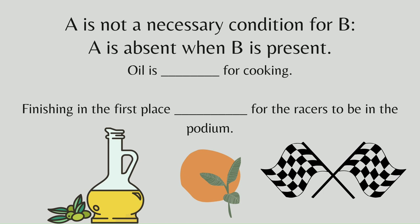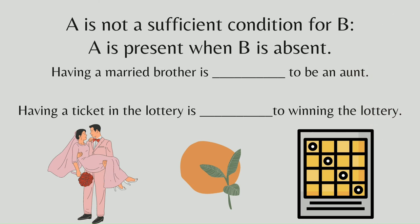A is not a necessary condition for B when A is absent but B is still present. Oil is not a necessary condition for cooking, because not all cooking requires oil — such as boiling or air frying. Finishing in first place is not a necessary condition for racers to be on the podium, because you do not need to finish first to get on the podium — you can still reach it even without finishing first.